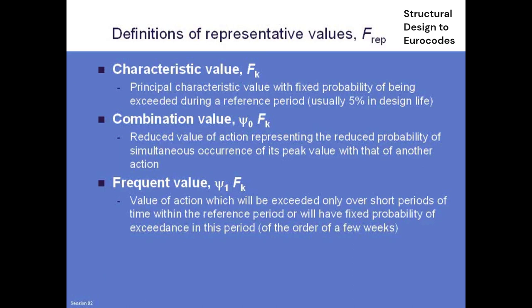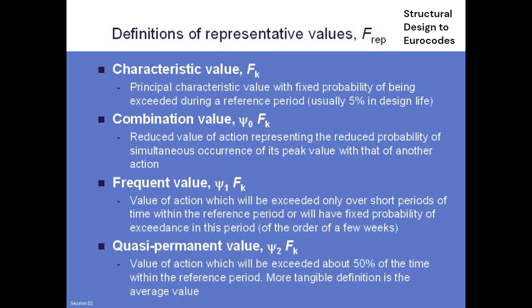Those two — full characteristic and psi_0 reduced — are typically what you need for the ultimate limit state. Sometimes you might want what's called a frequent value, representing an action with a return period of around a couple of months. This is relevant to construction or, more typically, to serviceability calculations such as crack widths. We multiply the characteristic value by psi_1 — the frequent factor — to convert it to a much shorter return period. Finally, we have the quasi-permanent value, obtained by multiplying the characteristic value by psi_2. It's defined as the value exceeded about 50% of the time — essentially an average value.